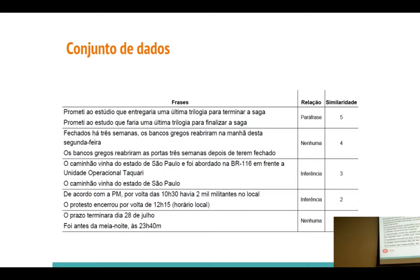Aqui a gente traz alguns exemplos. Na primeira sentença, tu consegue ver, pela relação de paráfrase, que uma diz praticamente a mesma coisa que a outra, e o valor de similaridade está alto. Na última, tu já tem uma frase como 'o prazo terminará dia 28 de julho' e 'foi antes da meia-noite'. Não tem como inferir esse tipo de informação a partir de frases curtas. Se a gente fizer uma análise de similaridade com Jaccard, por exemplo, ela vai se perder — tu acabaria tendo um coeficiente maior por palavras em comum, mas não necessariamente refletindo o significado real.